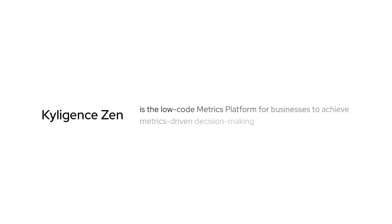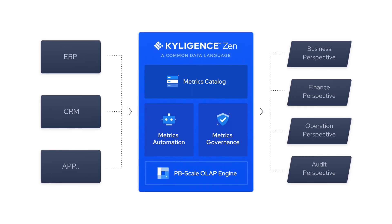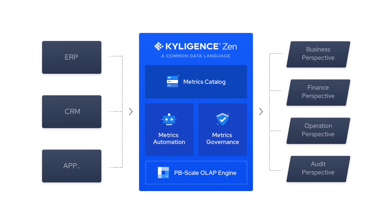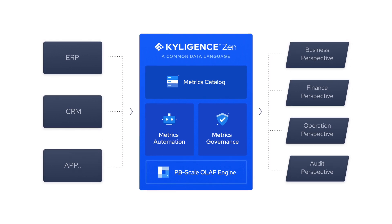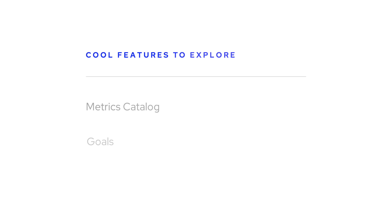Kylogen Zen is the low-code metrics platform for businesses to achieve metrics-driven decision-making. It helps you understand your business better by providing a holistic view of your data, allowing you to automate and streamline processes and ultimately make smarter decisions that impact your bottom line.